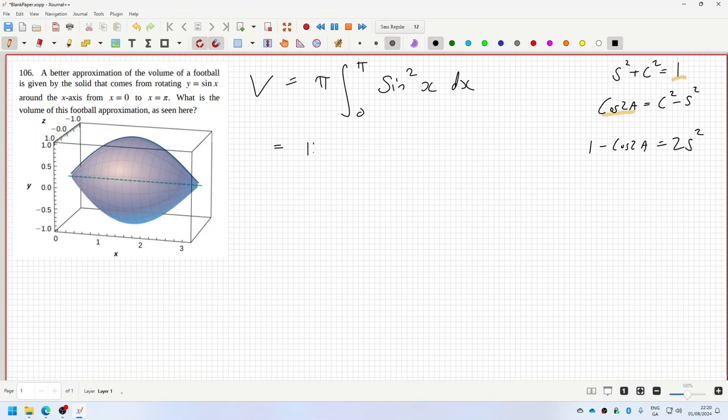So this is pi integral from zero to pi one minus cos 2x dx. That's pi over two times x minus a half sine 2x, evaluated from pi to zero.